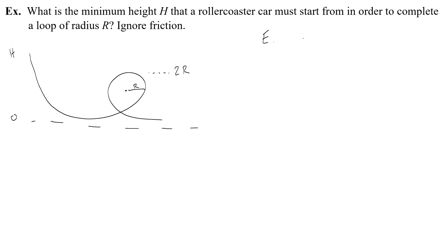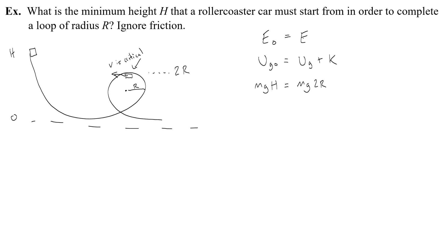For the energy analysis, E-naught equals E. In the beginning I have all potential energy — mgh. Then at the top of the loop, I have potential energy due to my height of 2r, written as mg(2r), and also some kinetic energy, one-half mv squared, because the object has to be moving at that point with a velocity.